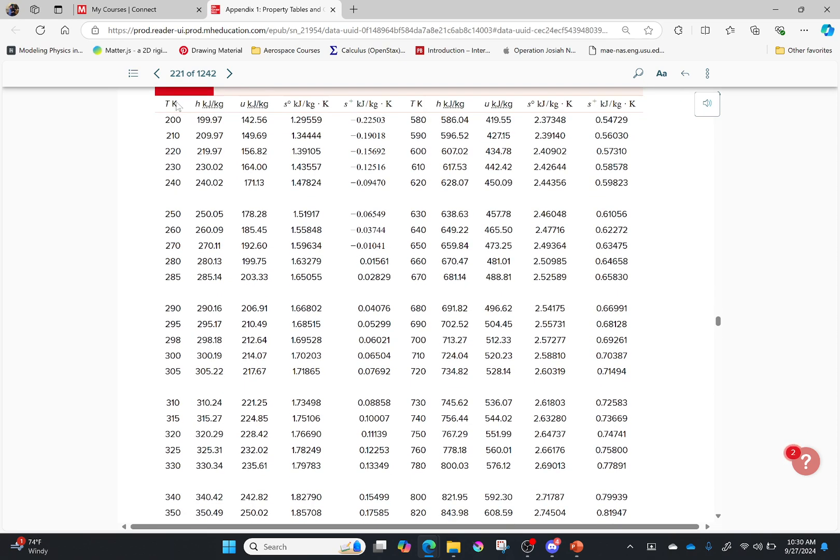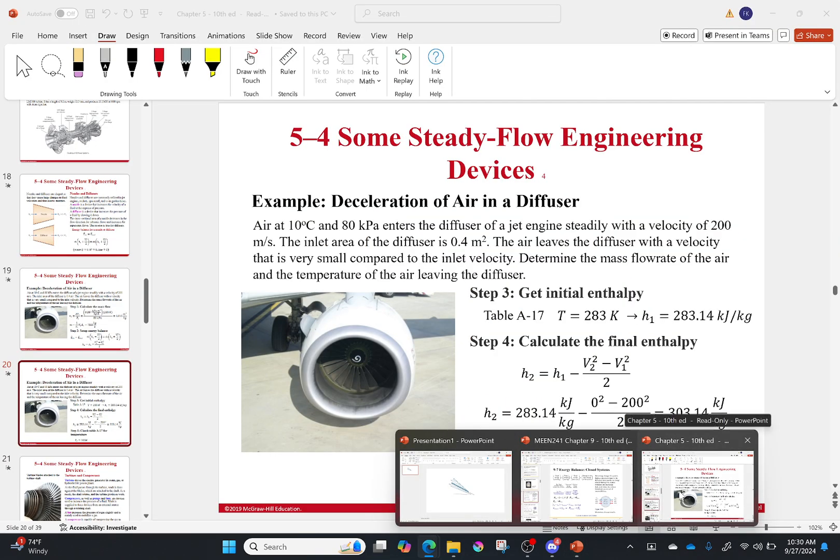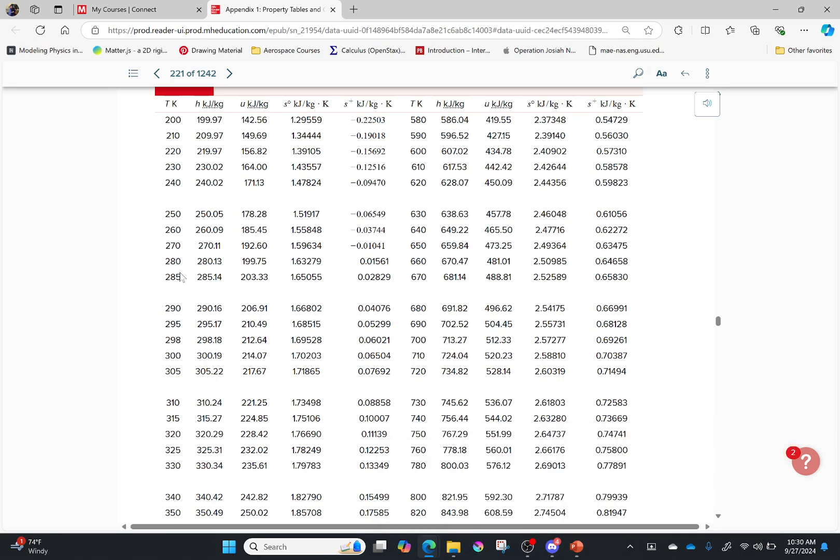Now this temperature is in Kelvin. If I go back to my problem statement, our temperature was 10 degrees Celsius, 283 Kelvin. So I'm pretty much right in between these two, so I would have to interpolate. But I want you to look at something real quick so we can avoid interpolating.